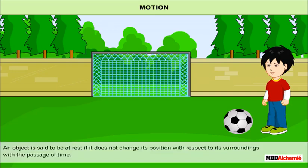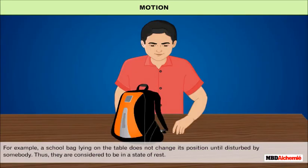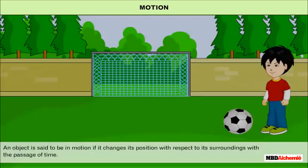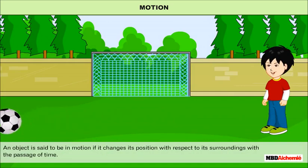An object is said to be at rest if it does not change its position with respect to its surroundings with the passage of time. For example, a school bag lying on the table does not change its position until disturbed by somebody, thus it is considered to be in a state of rest.